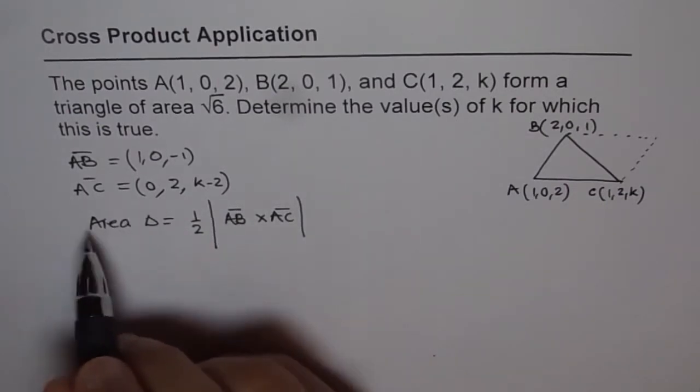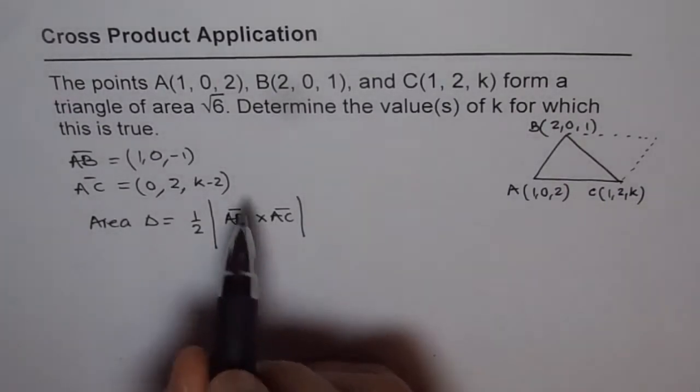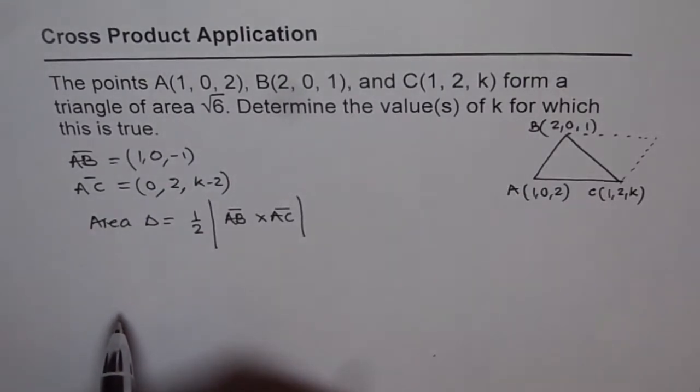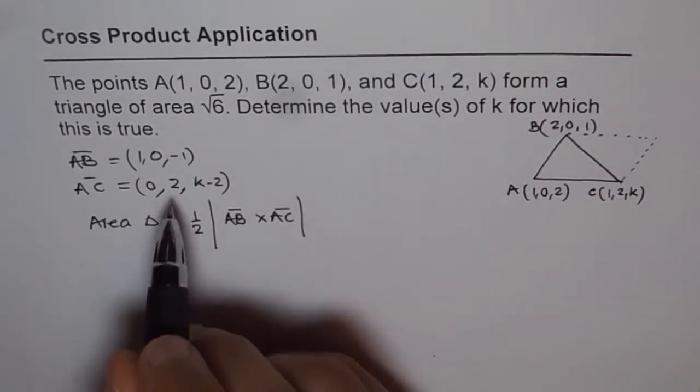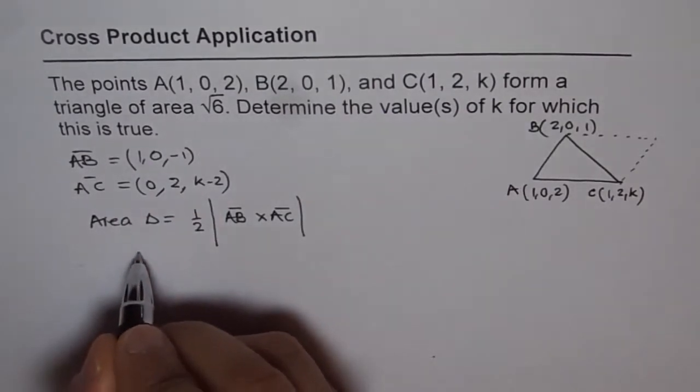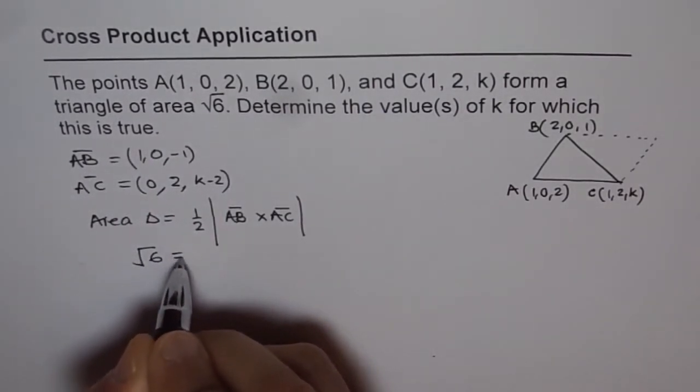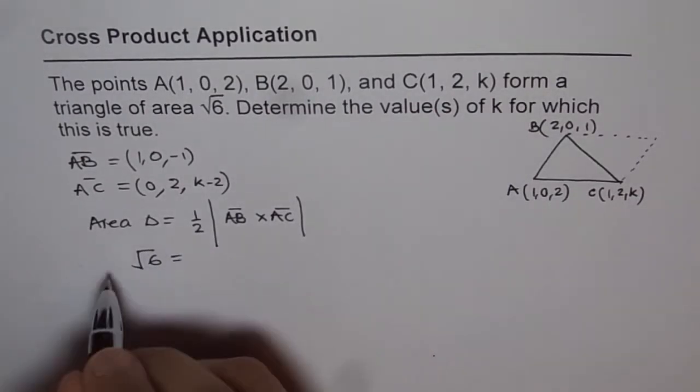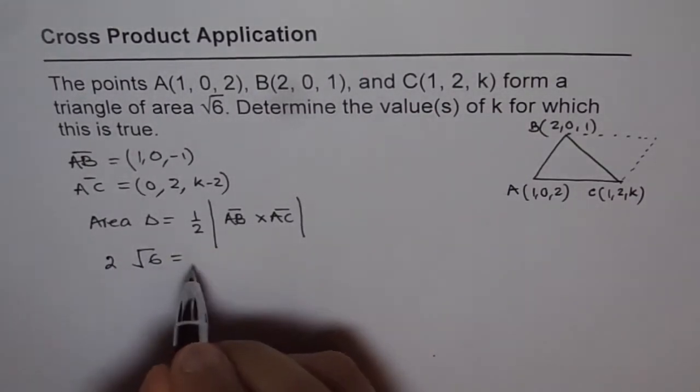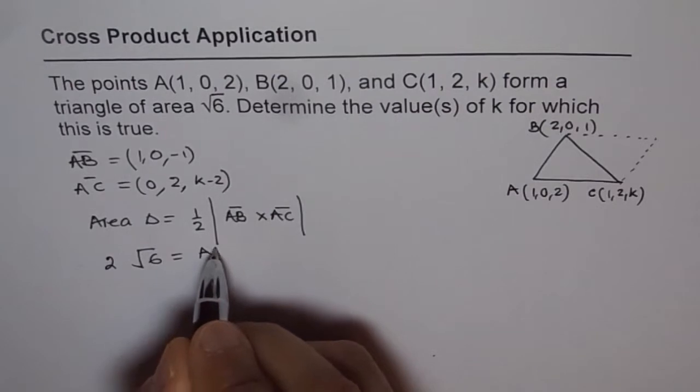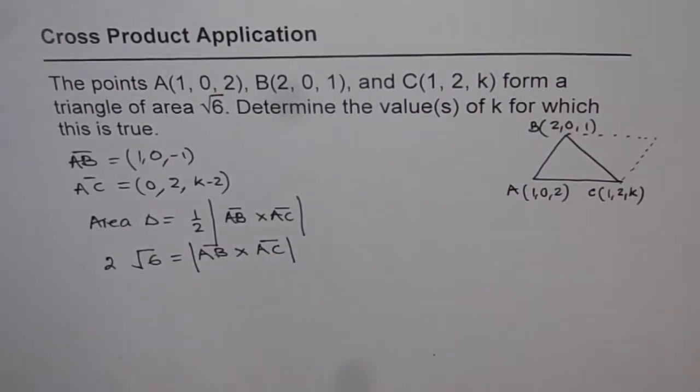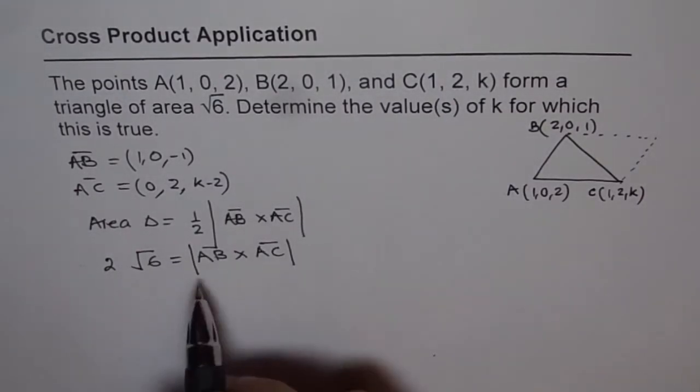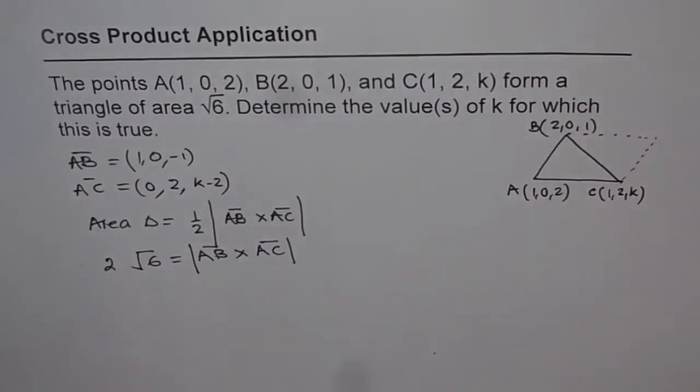In this problem, we are given the area as √6. So half of the cross product magnitude equals √6. Multiplying by 2, we get 2√6 equals the magnitude of AB cross AC. That becomes our equation. Now we have to find what AB cross AC equals.